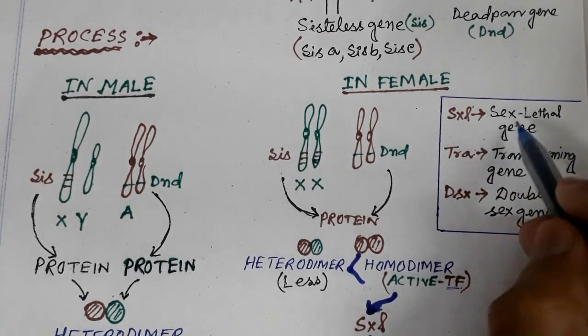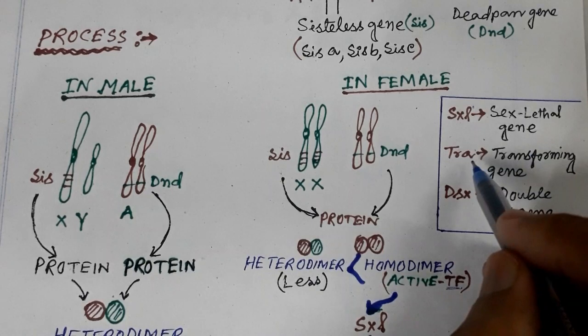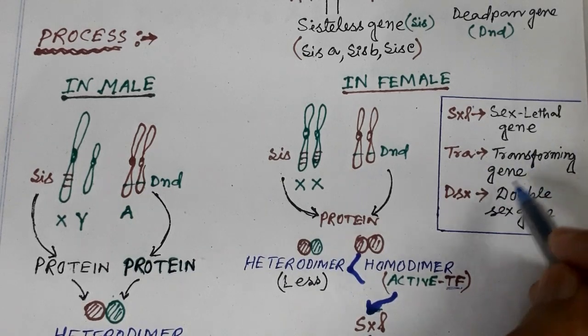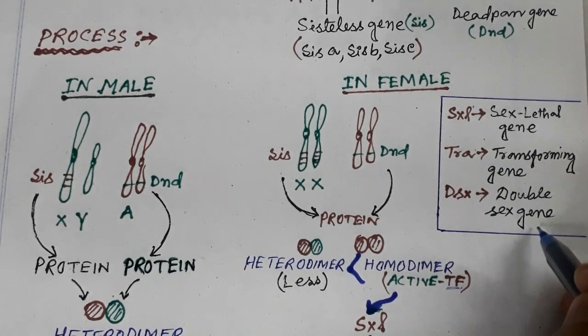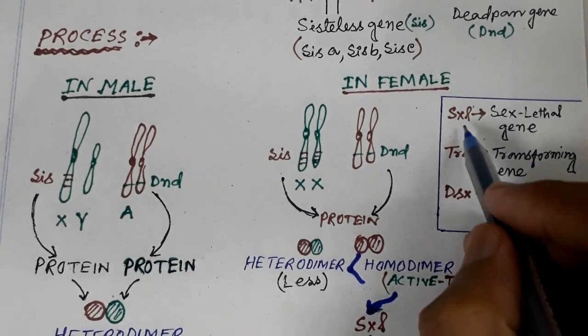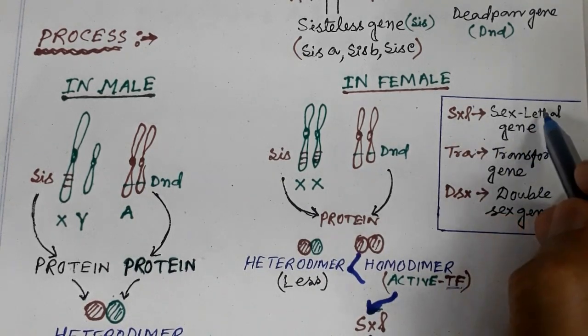The sex-lethal gene (SXL) is a key gene in this pathway. The transformer gene (tra) is the male-determining gene, and then the doublesex gene (dsx) is the double sex gene involved in determining the final sexual phenotype.